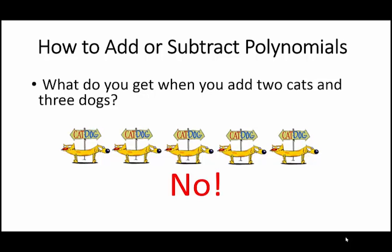Because the cats continue to be cats and the dogs continue to be dogs. I mean, you may have five pets, but you still have two cats and three dogs. Now we can apply this same principle when we add polynomials.